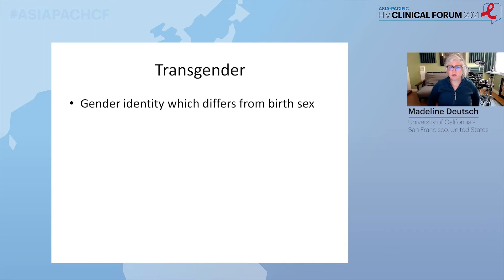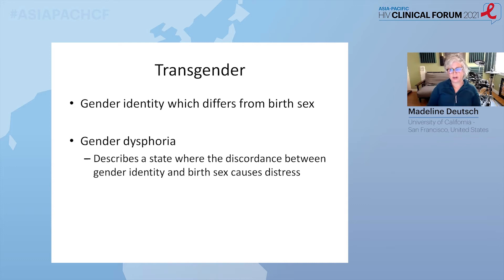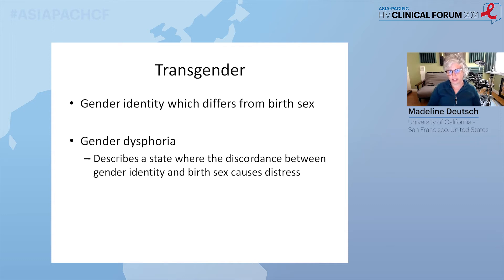Transgender is a term that describes people who have a gender identity that differs from the sex they were assigned at birth. Gender dysphoria describes a state where the discordance between your gender identity and sex assigned at birth actually causes distress. Not all transgender people are experiencing gender dysphoria at any given point in time. Many transgender people no longer have dysphoria once they've been able to access gender-affirming interventions and treatments, including hormone therapy or surgery. The problem is that the ICD coding scheme does not have a diagnostic code for the care of a transgender person who does not have dysphoria and just needs maintenance hormone therapy. All transgender people, if you're using ICD encoding for a trans-specific reason, have to be given this diagnosis of gender dysphoria, which is a stigmatized diagnosis.